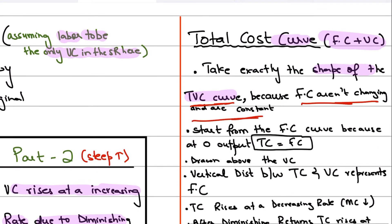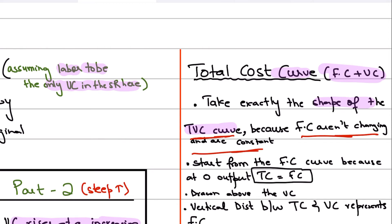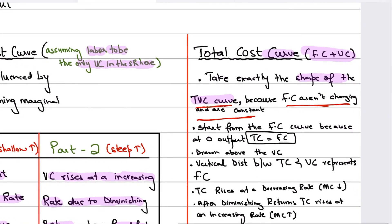The total cost curve takes exactly the same shape as the total variable cost curve because fixed cost is constant — it doesn't change. The only cost that changes is variable cost. If fixed cost is the same and variable cost initially increases at a decreasing rate, total cost will also increase at a decreasing rate. Once variable cost increases at an increasing rate and the variable cost curve becomes steep, the total cost curve will also become steep.